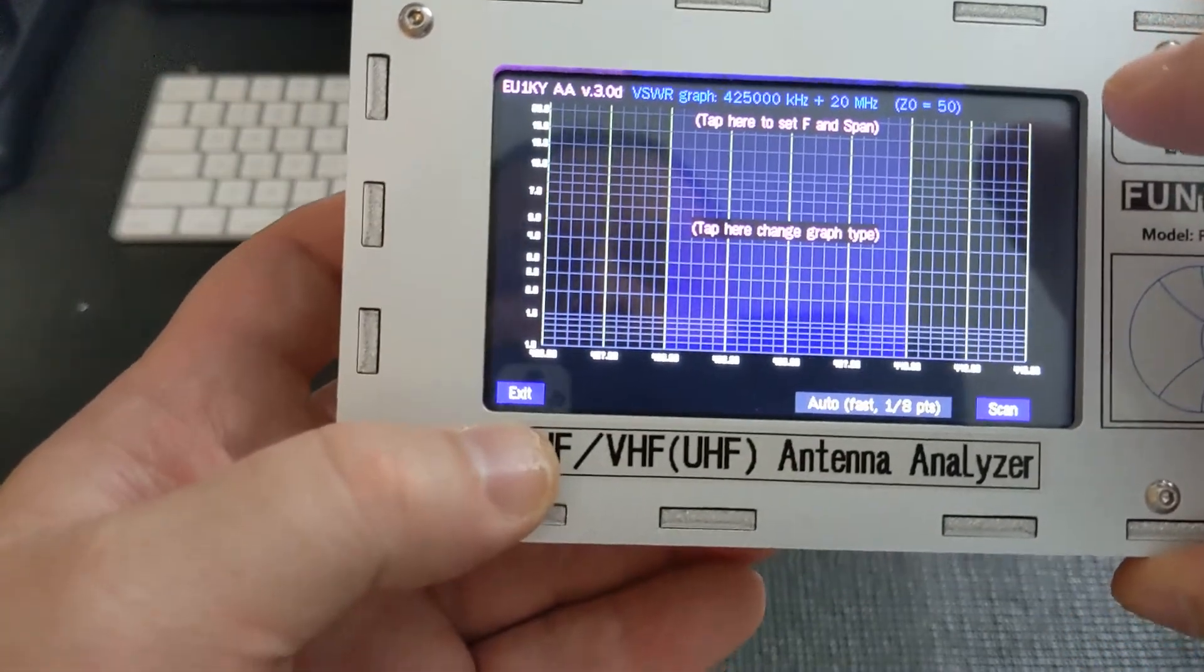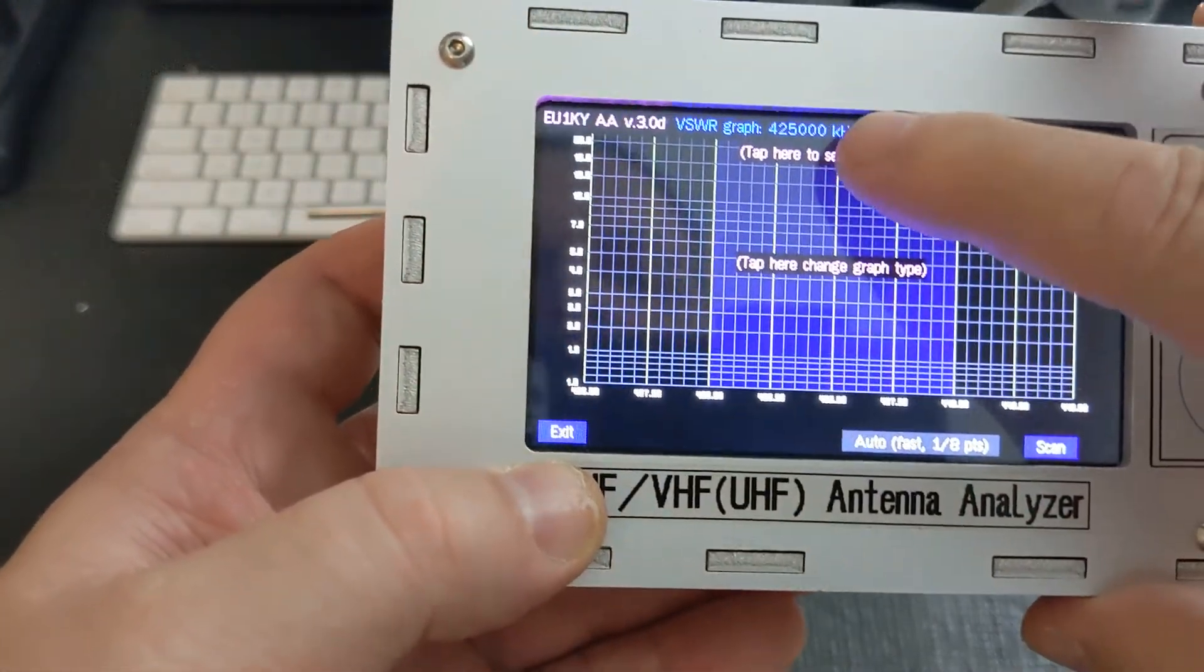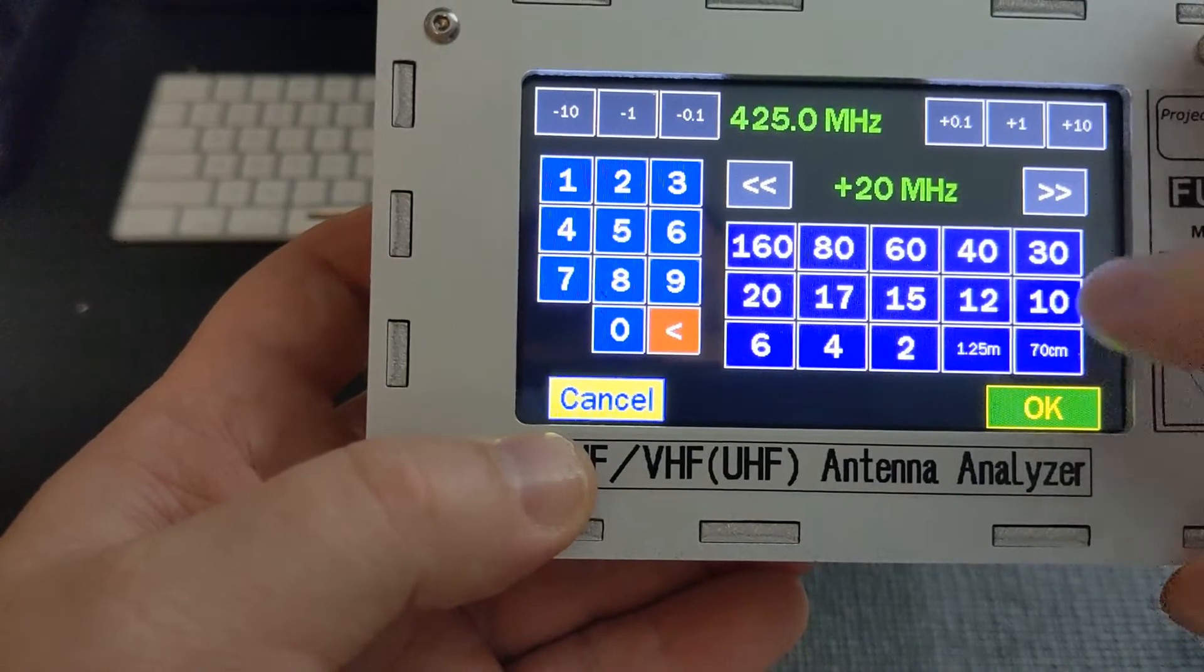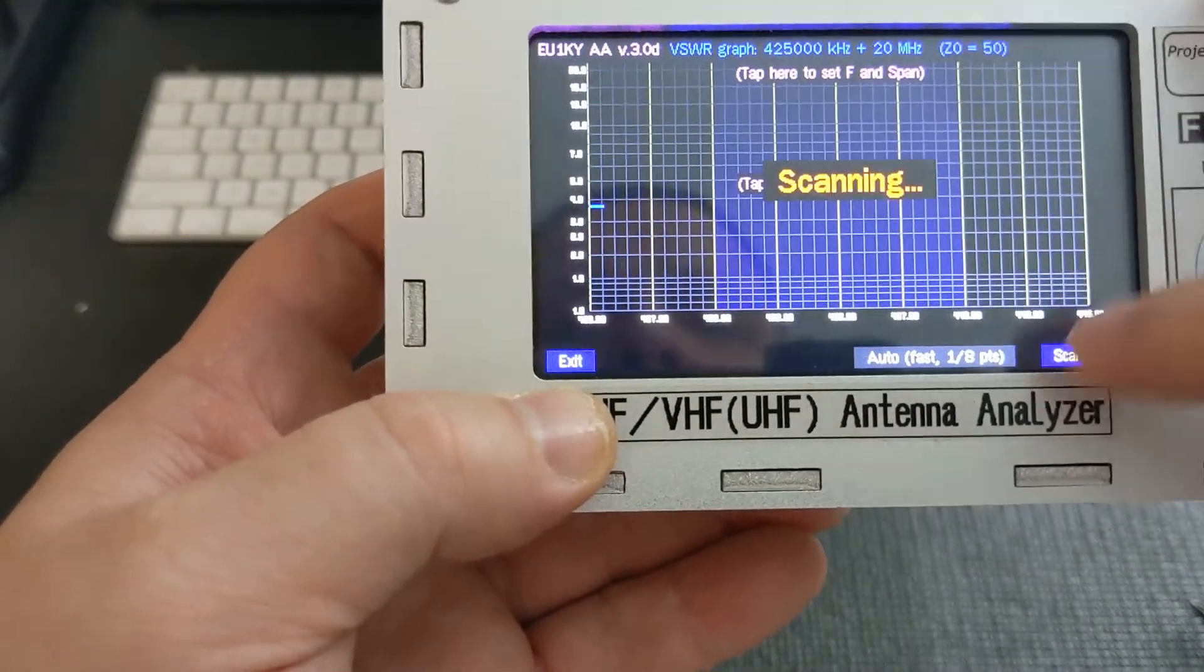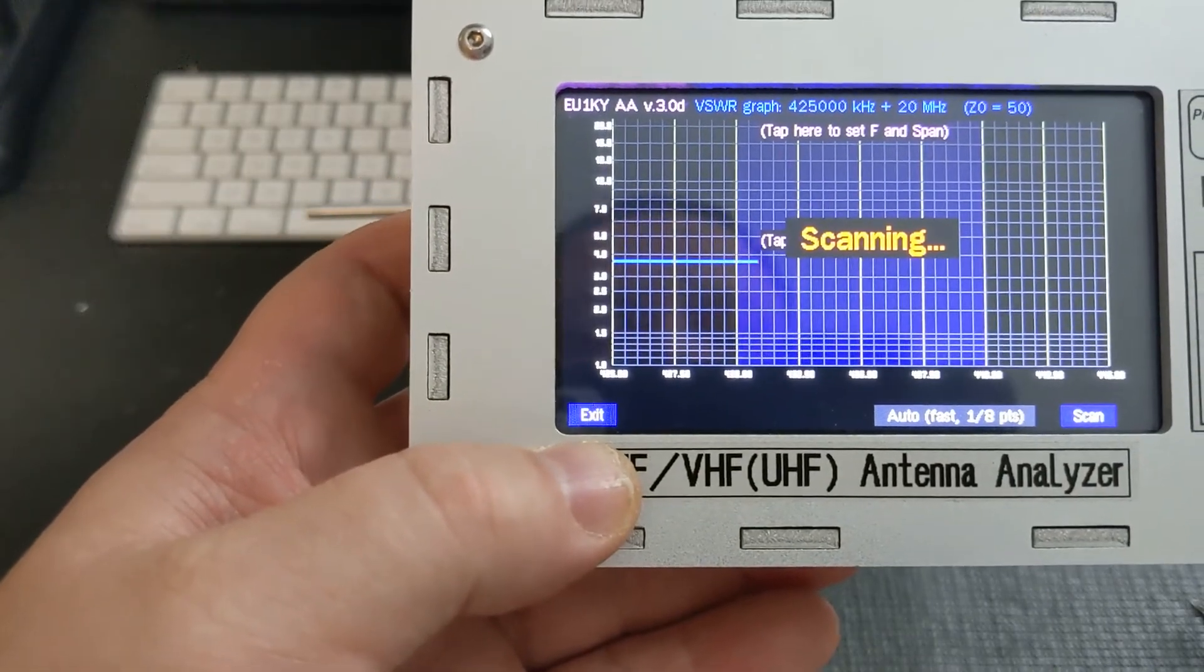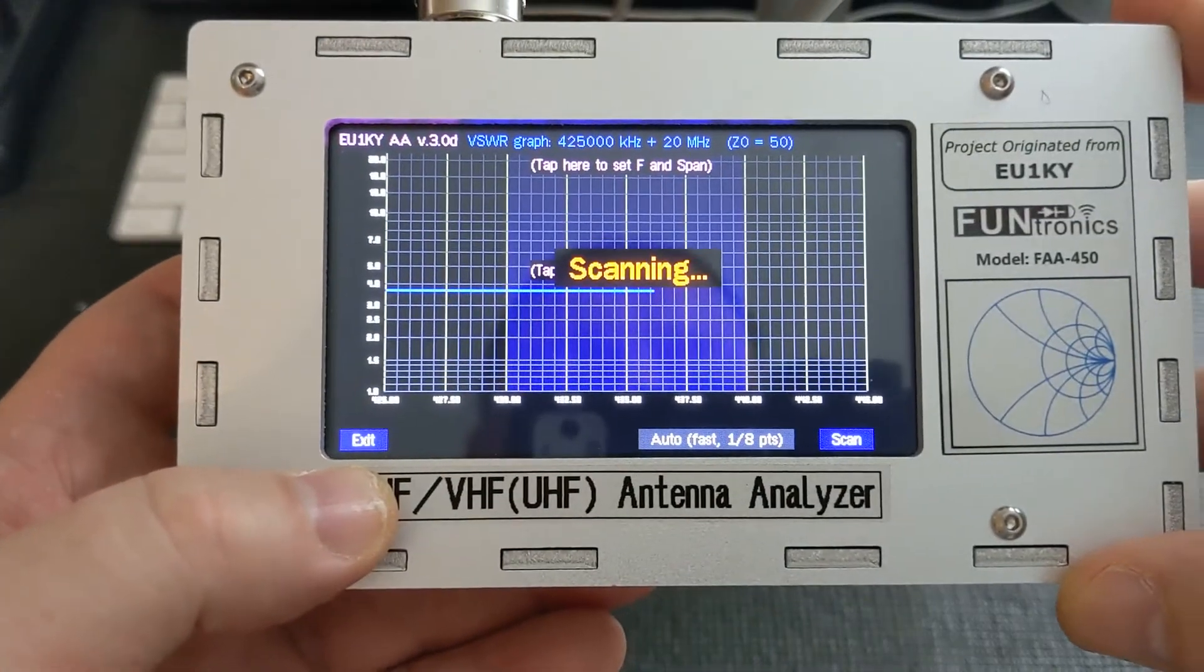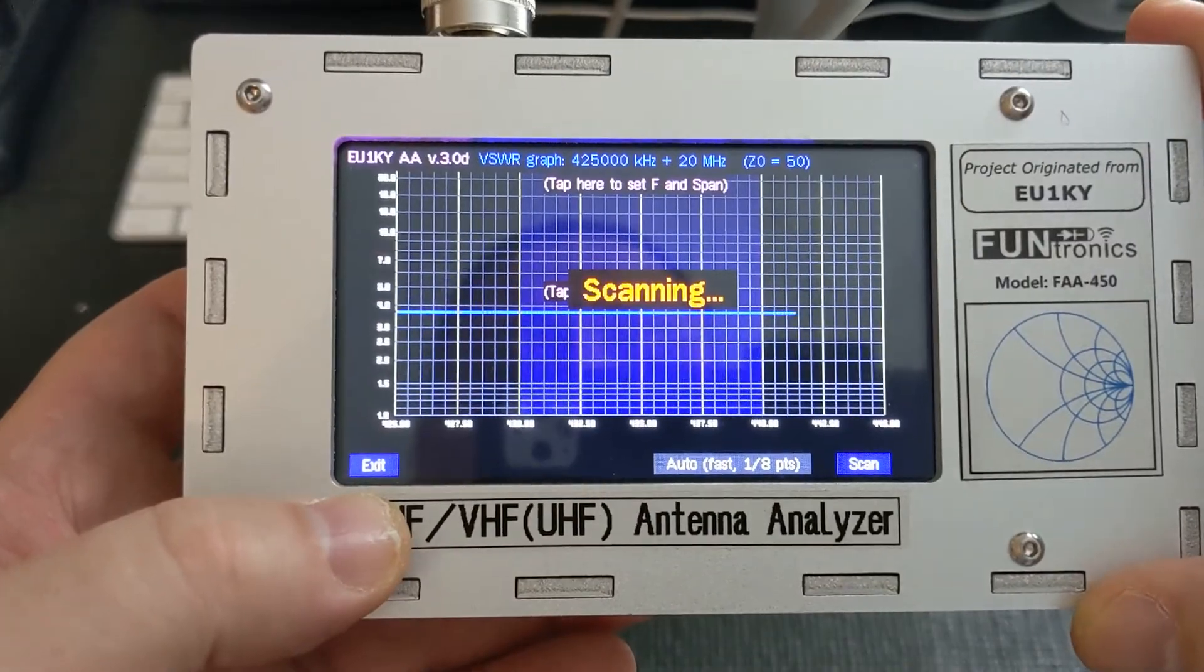We're going to pick panoramic scan, then select the frequency, which is 70 centimeters, then hit OK and start the scan. You can see here the scan is scanning across the band and it's completed.